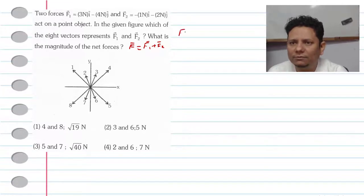Now, what will be the magnitude? F1 is 3i cap minus 4j cap and F2 will be minus i cap minus 2j cap. These are both in Newton.